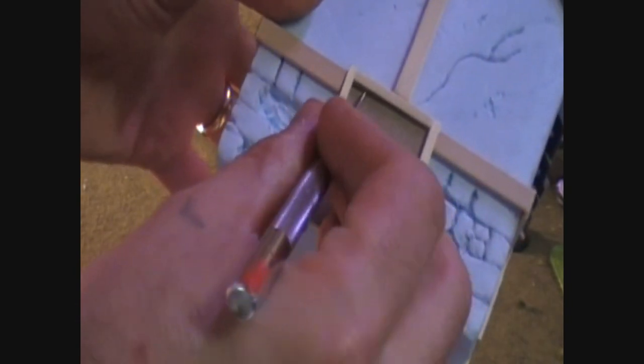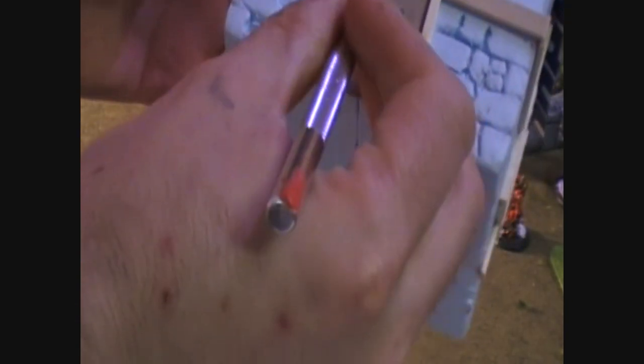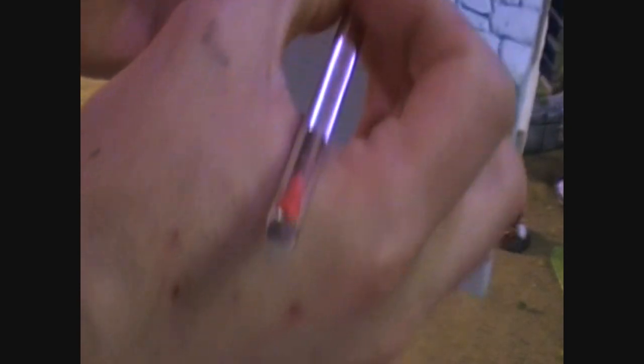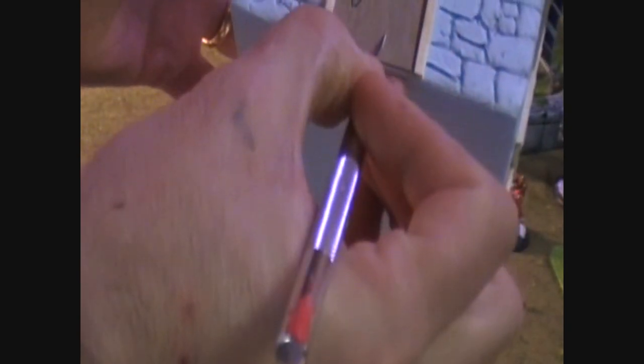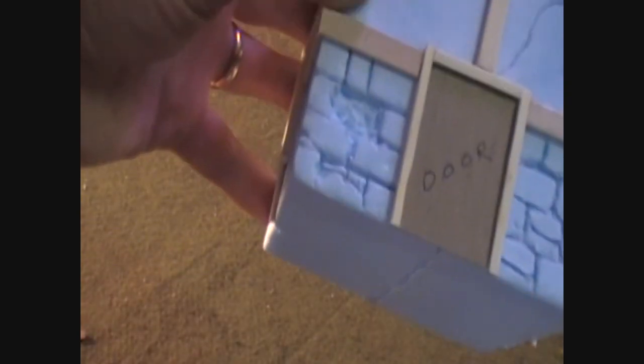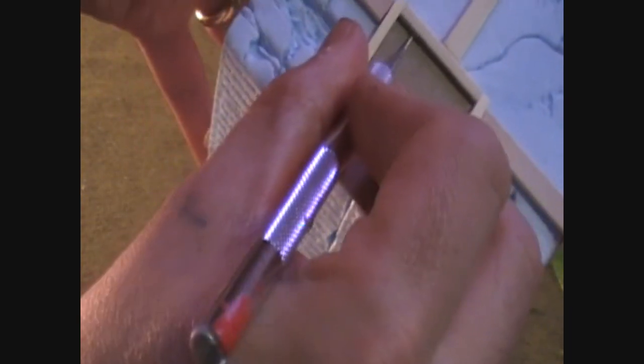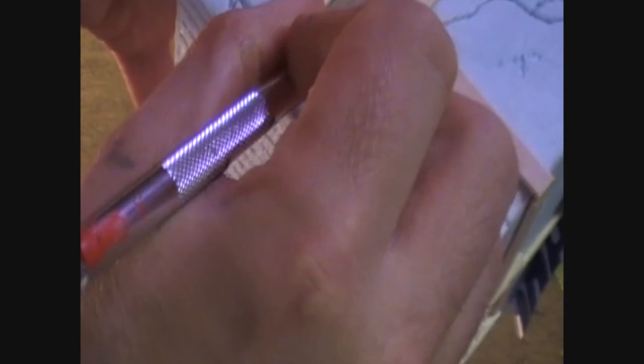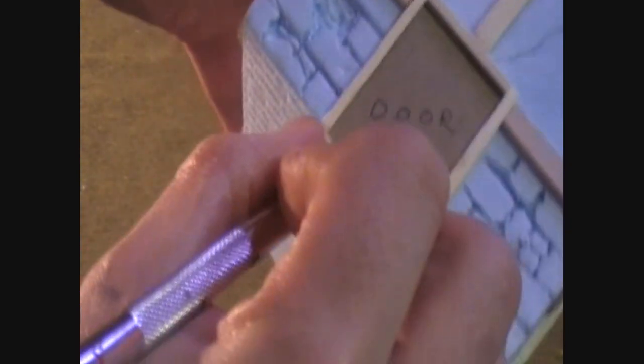So I'm going to make some vertical slats. I'm just going to carve the pattern of a wooden door, which you really can't see very clearly on the video. But trust me, it's going to show up during painting. I'm going to go over those cuts to accentuate the different boards that make up the door.